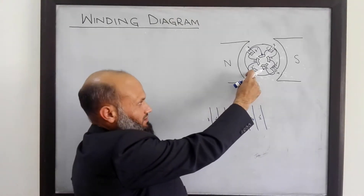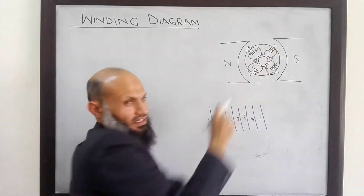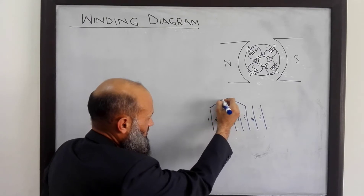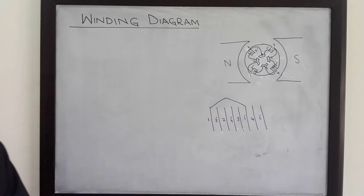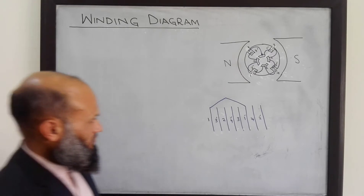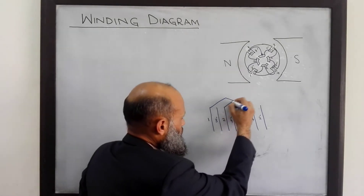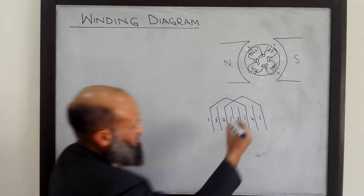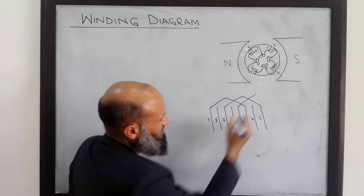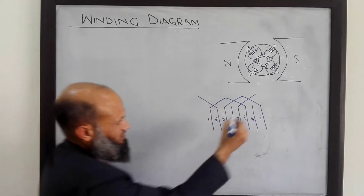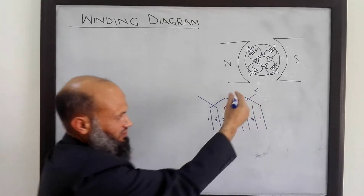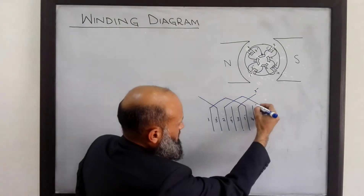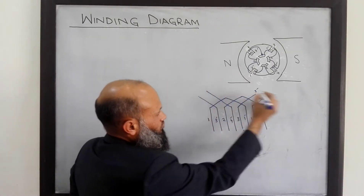At the back end, side one and one dash are shorted. Likewise, two and two dash are also shorted at the back end. Similarly, at the back end, three is connected to three dash. Since we have cut it open, that connection is not shown. Likewise, four is connected to four dash.